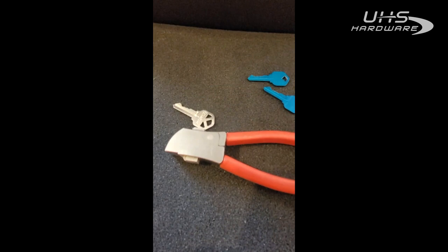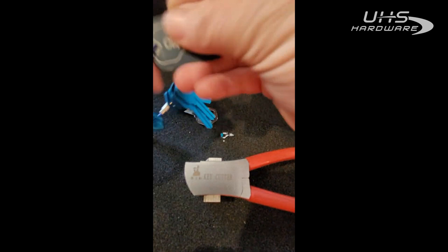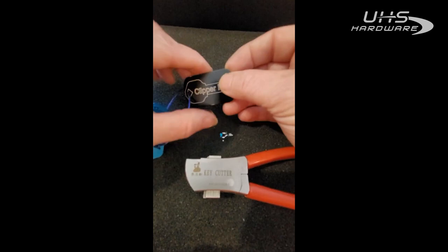So this is cutting a Kwikset key on the Lishi clipper using the Clipper Keys in order to create a key at the door pretty easily. I will tell you, using the camera is helpful to me because my close-up vision—I do wear bifocals—so it's helpful.